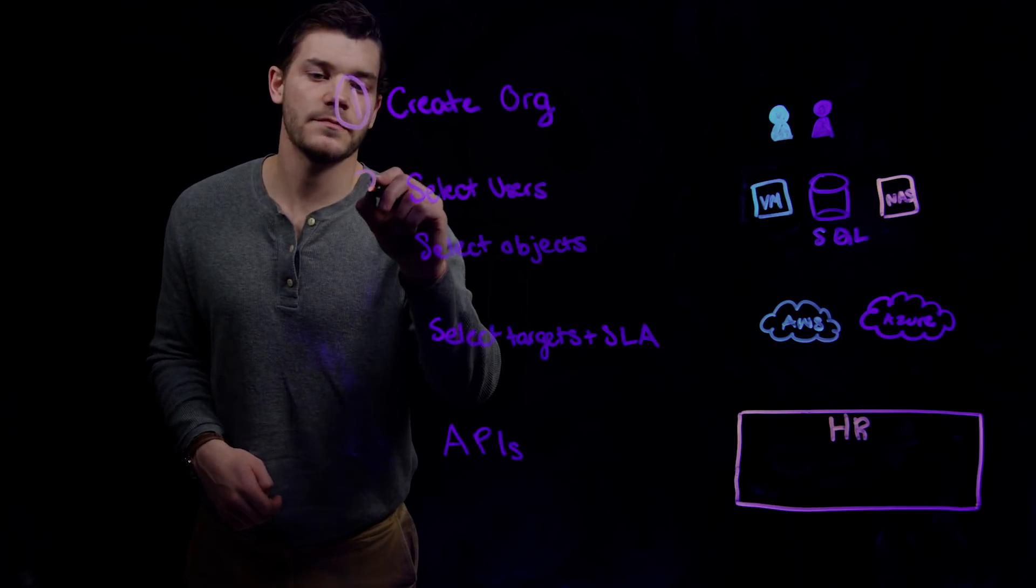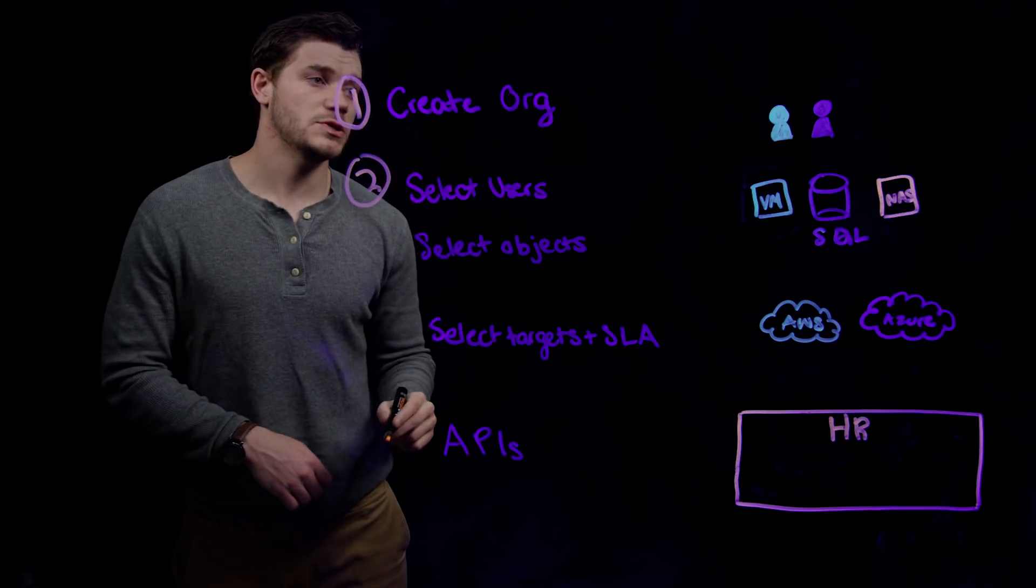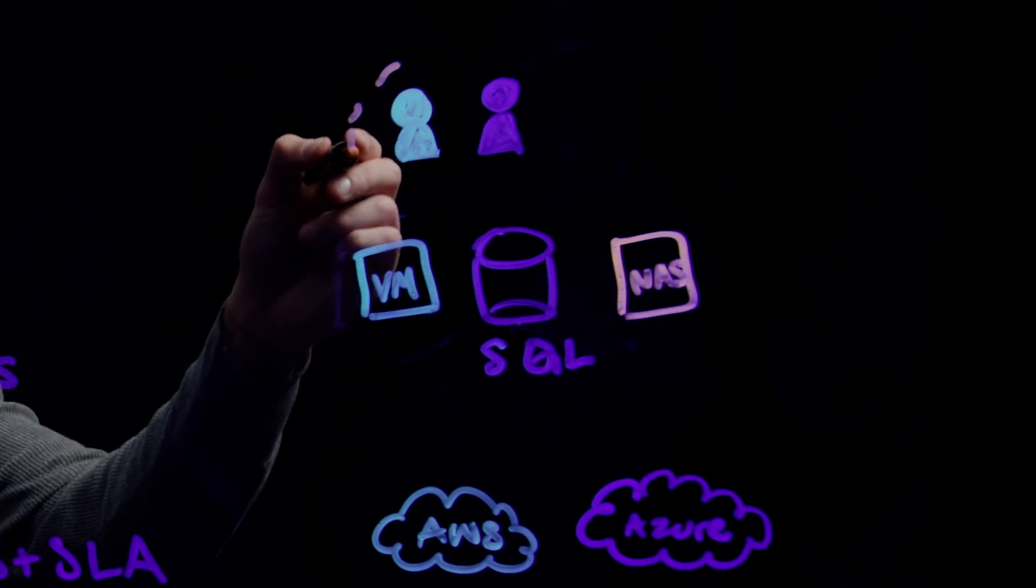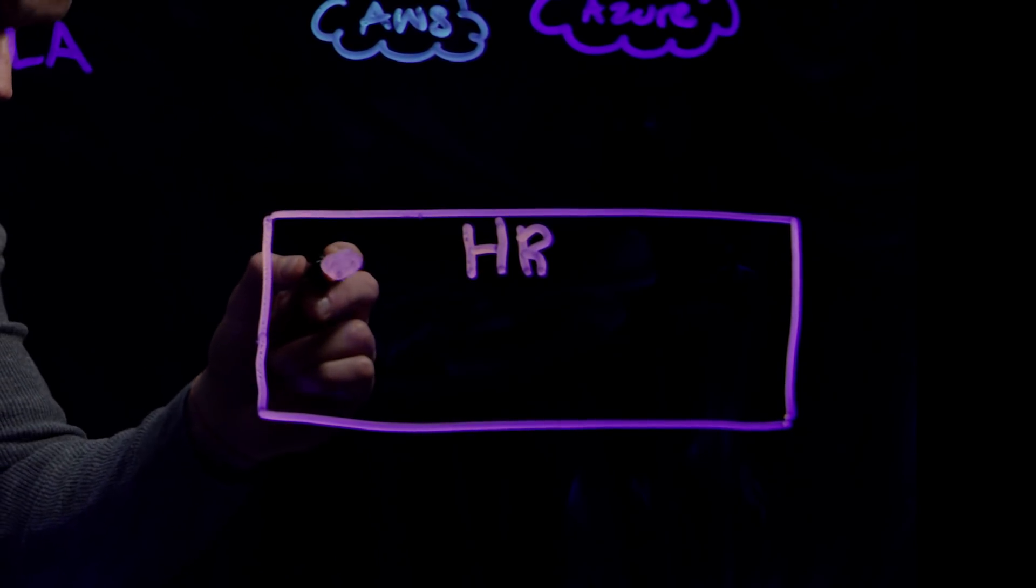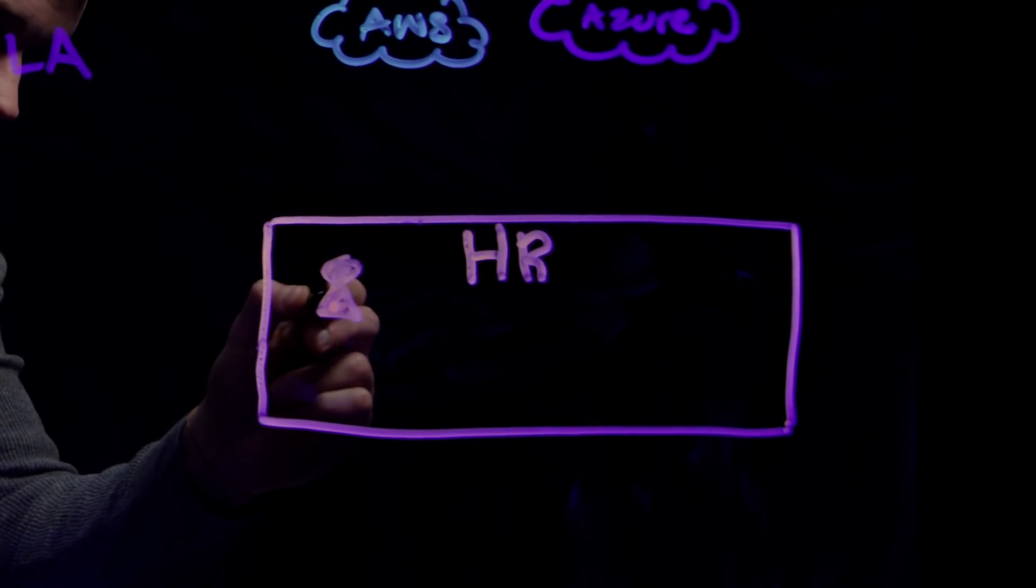The second step is to select the users that should have access to this organization. These users will be able to log in and see the resources given to this organization and then take subsequent action only on them.